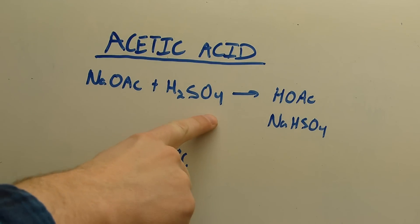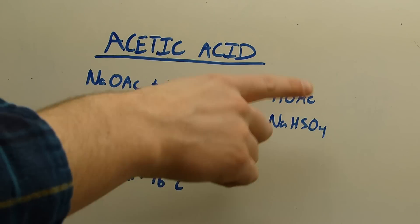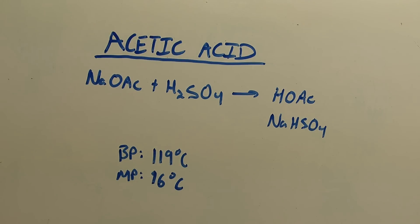When the two are mixed together, an equilibrium is set up as shown here. You can see that since acetic acid boils at 119 Celsius and sulfuric acid boils at around 300, the acetic acid is easily separated from the mixture by boiling. So that's just some simple distillation that we can do.